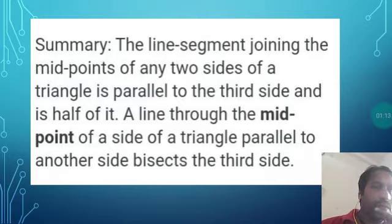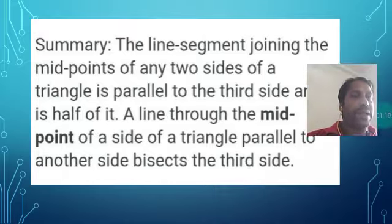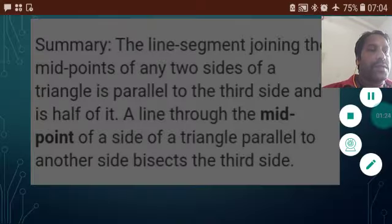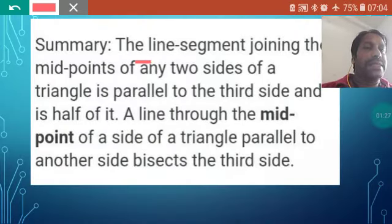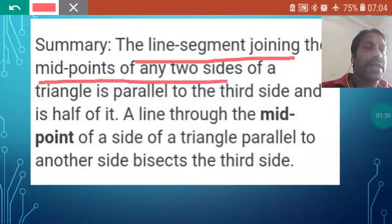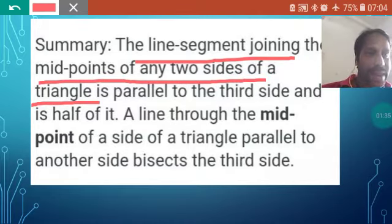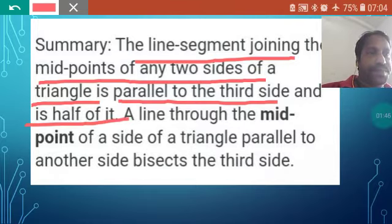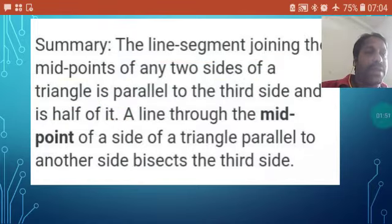Let me recall the midpoint theorem one more time. The line segment joining the midpoints of any two sides of a triangle is parallel to the third side and is half of it. Although it appears in the triangle chapter, we are reading it here in the quadrilateral chapter. This is called the midpoint theorem.